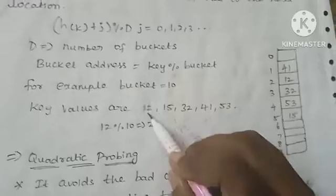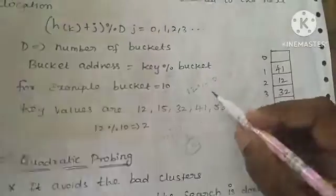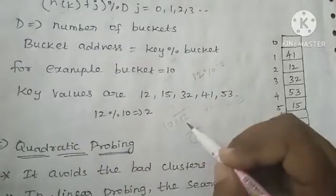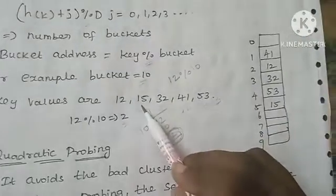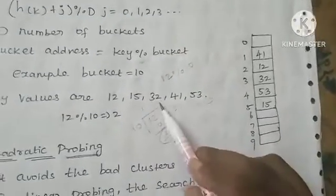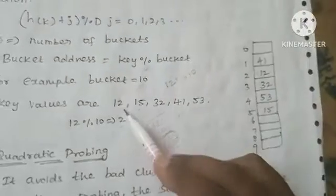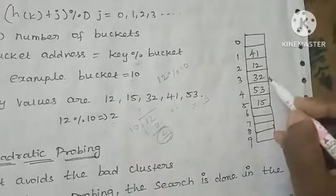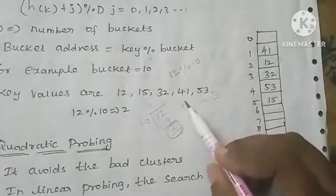With key values given, the formula is key modulus bucket size. The first key is 12: 12 mod 10 — the remainder is 2, so position 2 is occupied by 12. Next, key 15: 15 mod 10 remainder is 5, so position 5 is occupied by 15. Next, key 32: 32 mod 10 gives position 2, but position 2 is already occupied by 12, so we move to the next free position and insert 32 there.